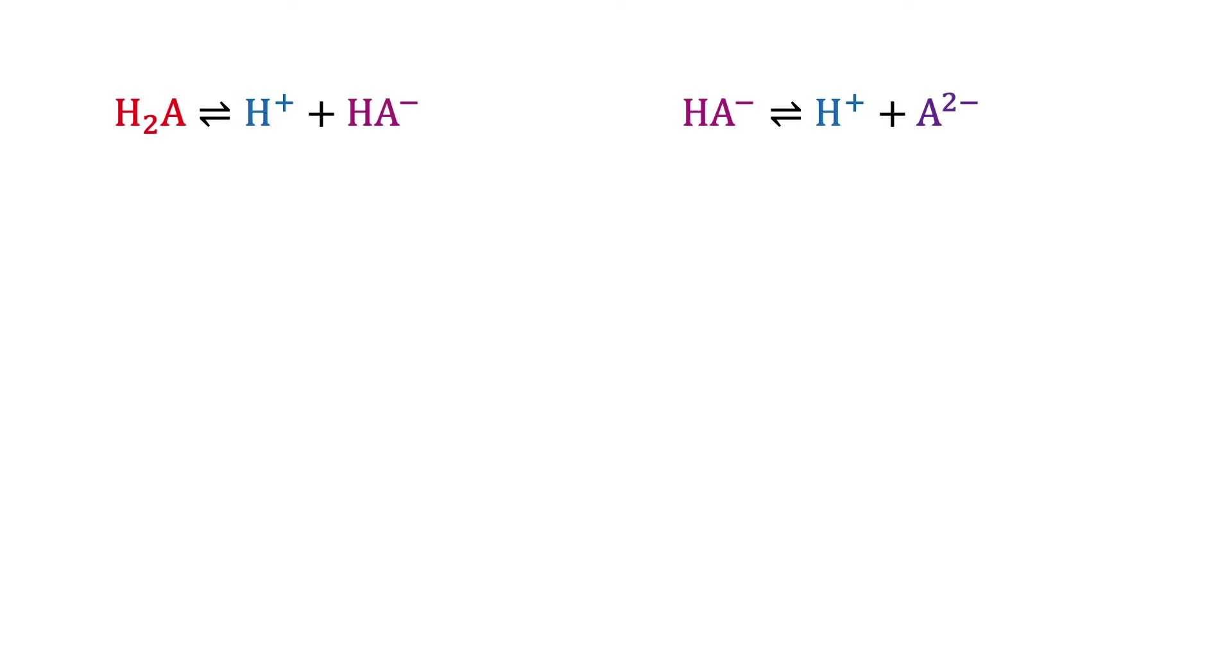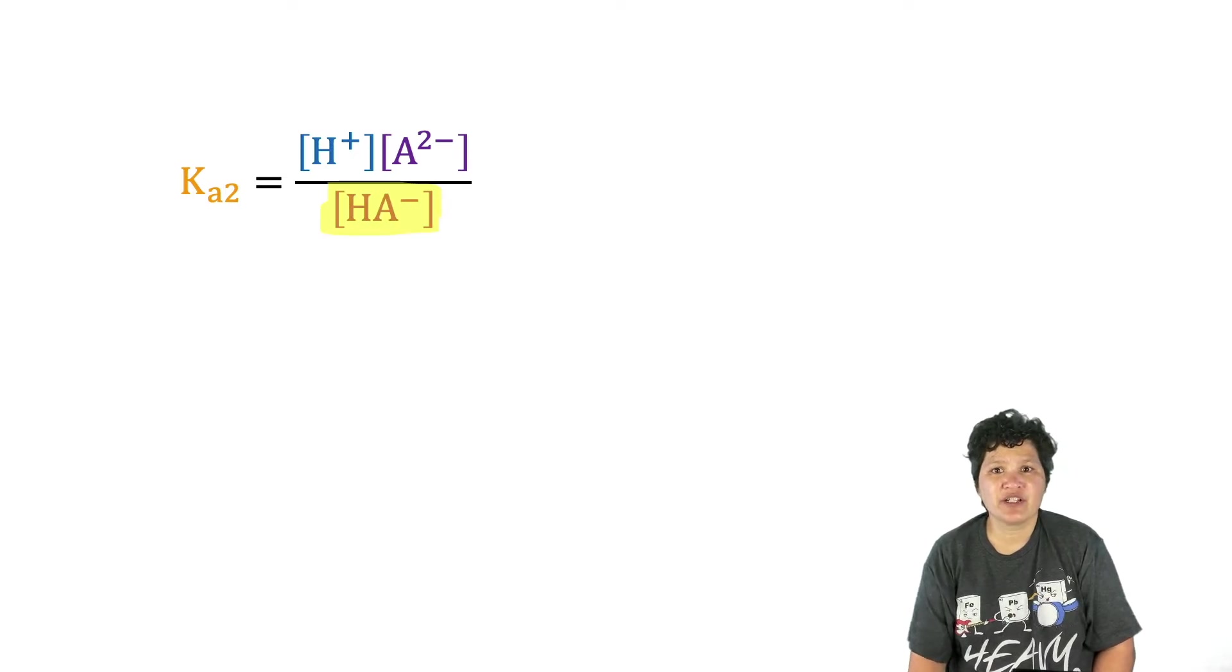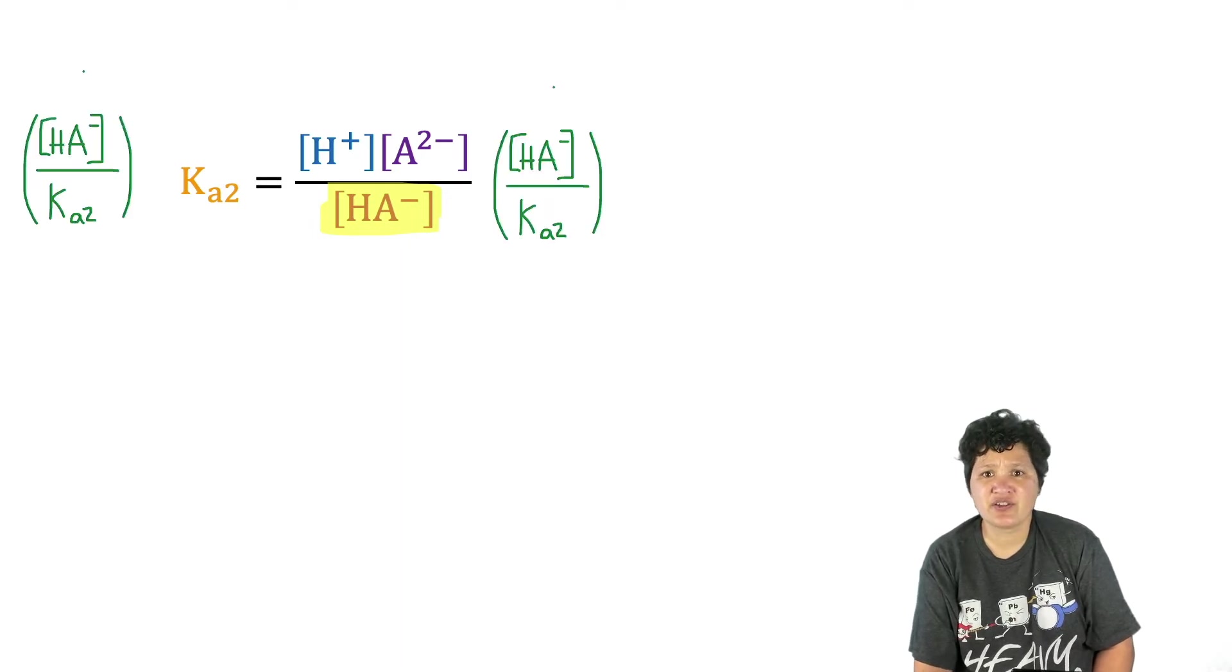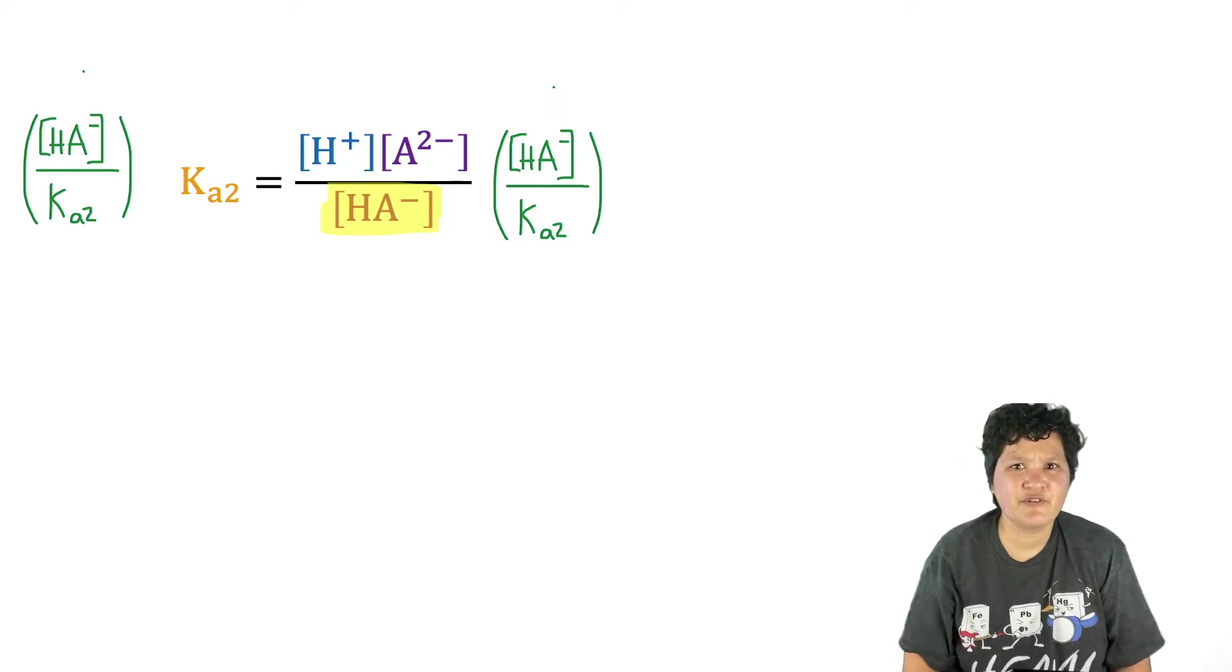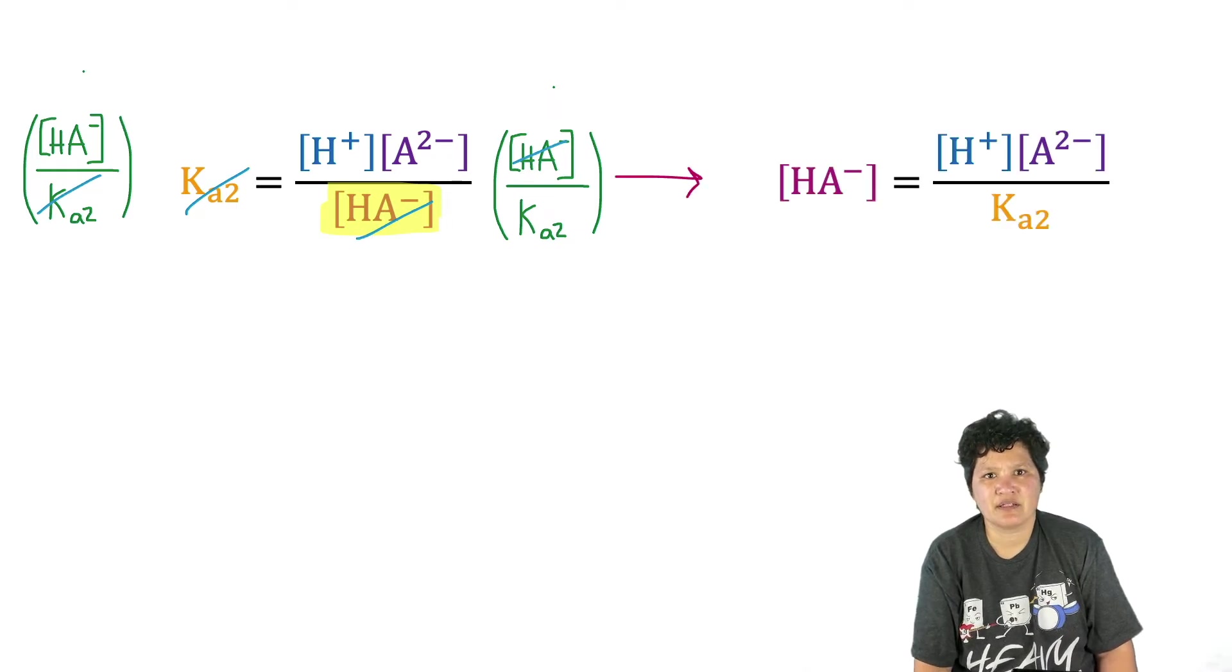To do that, we need to remember that each of those protons that could dissociate has its own associated equilibrium constant. So we have two acid dissociation constant expressions that we can use for this purpose. We're going to start with our expression for Ka2, the second acid dissociation constant. And what we're going to do here is solve for the concentration of HA as a function of everything else. To do that, we'll multiply both sides by the concentration of HA- and divide both sides by Ka2. If we do that, we see that the concentration of HA- minus equals the concentration of H plus times the concentration of A2 minus divided by Ka2.